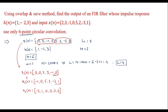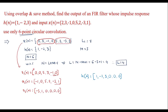We now have the three sub-blocks x1, x2, and x3 of n. Next we prepare h of n: its length must also be equal to N equals 6. The h of n sequence has 3 samples — 1, minus 2, 3 — so we add L minus 1 equals 3 zeros to make it length 6: 1, minus 2, 3, 0, 0, 0. We then perform circular convolution between each sub-block and h of n.